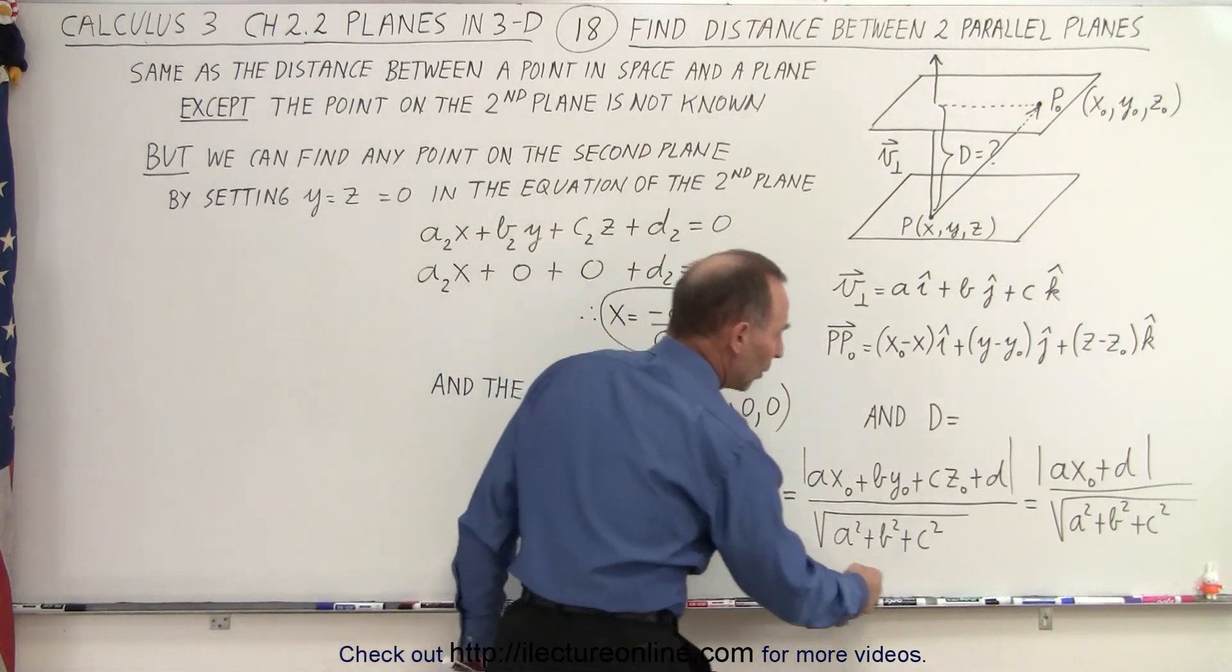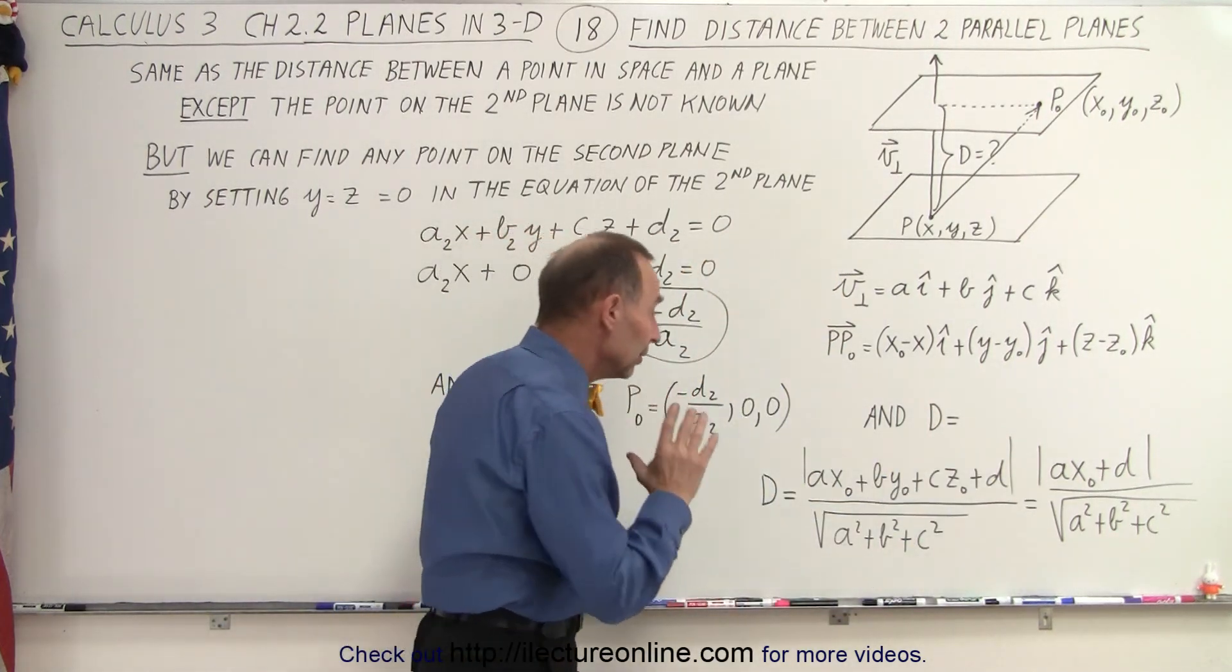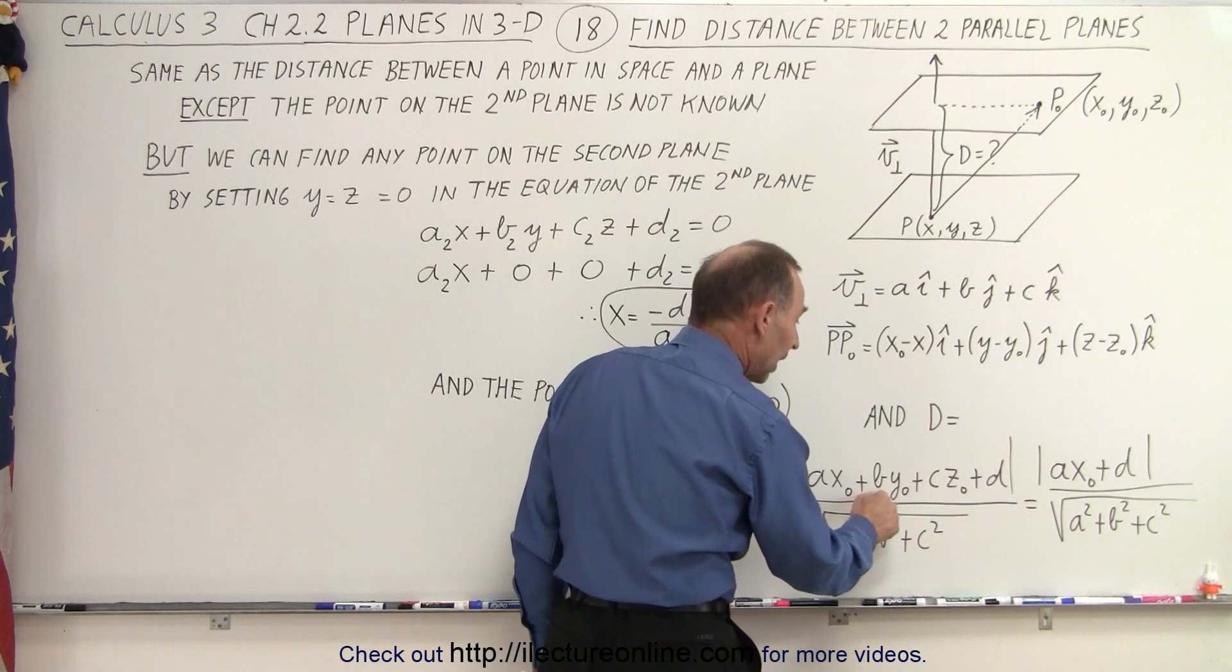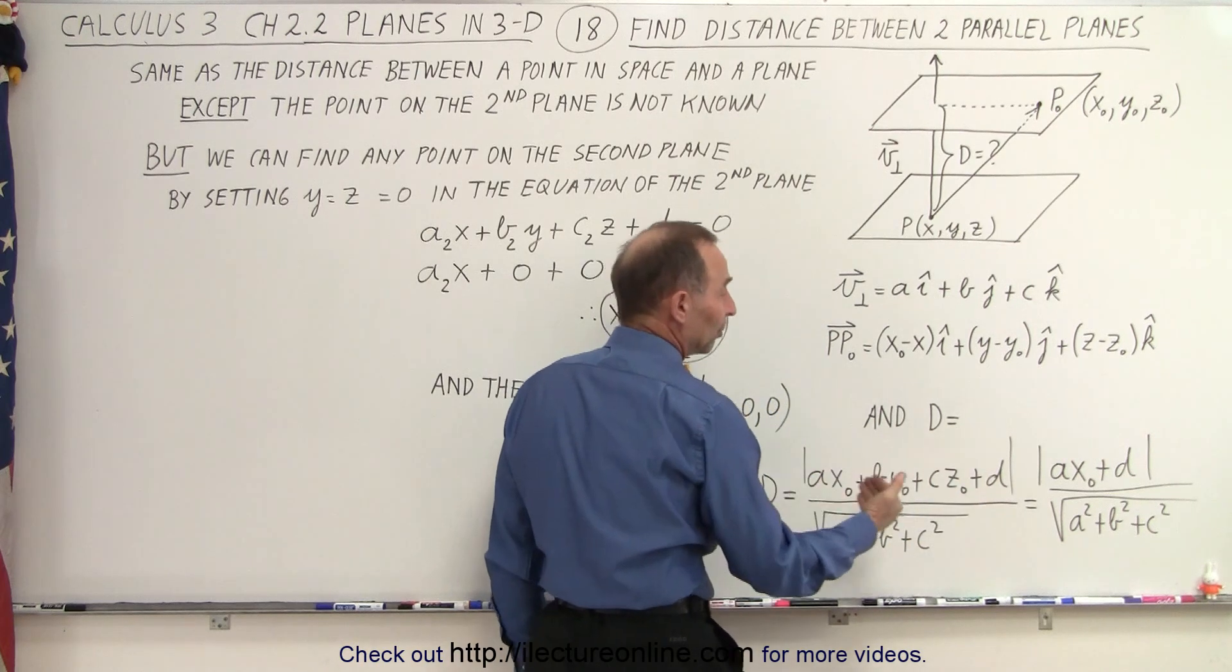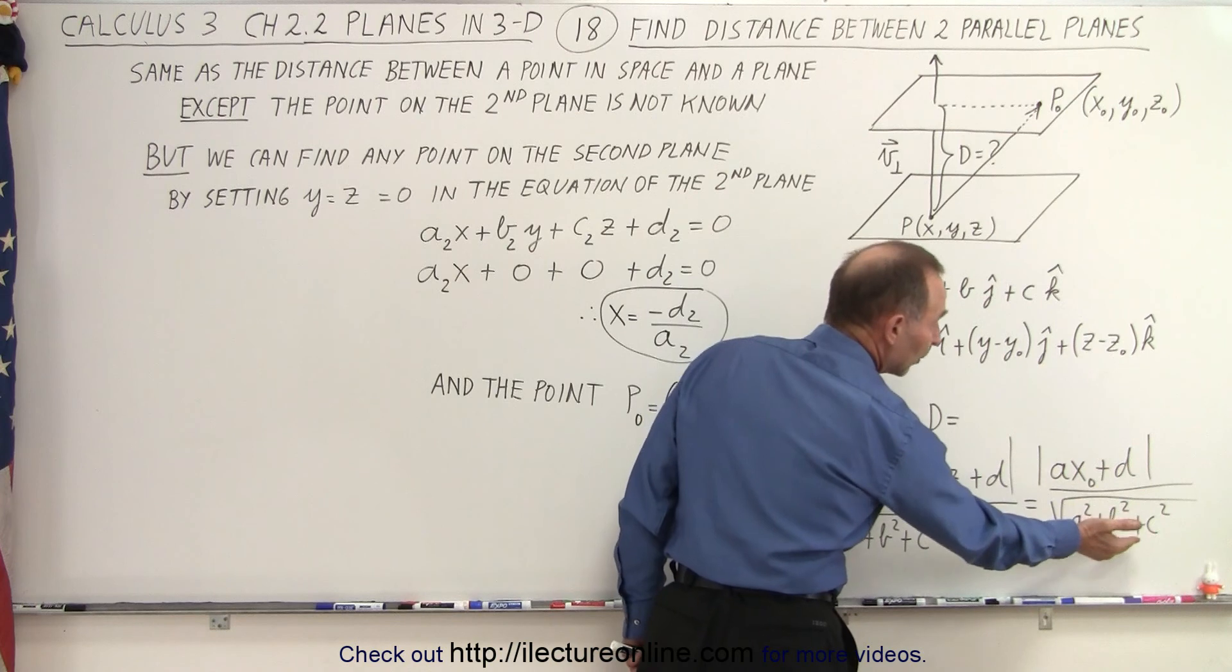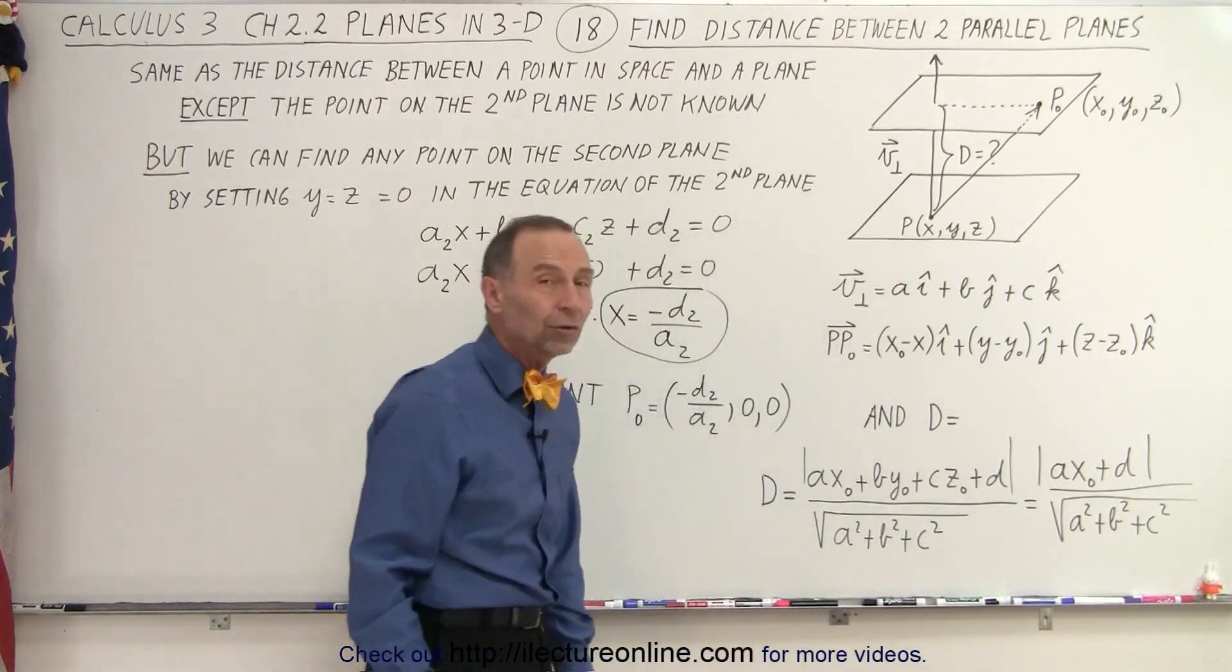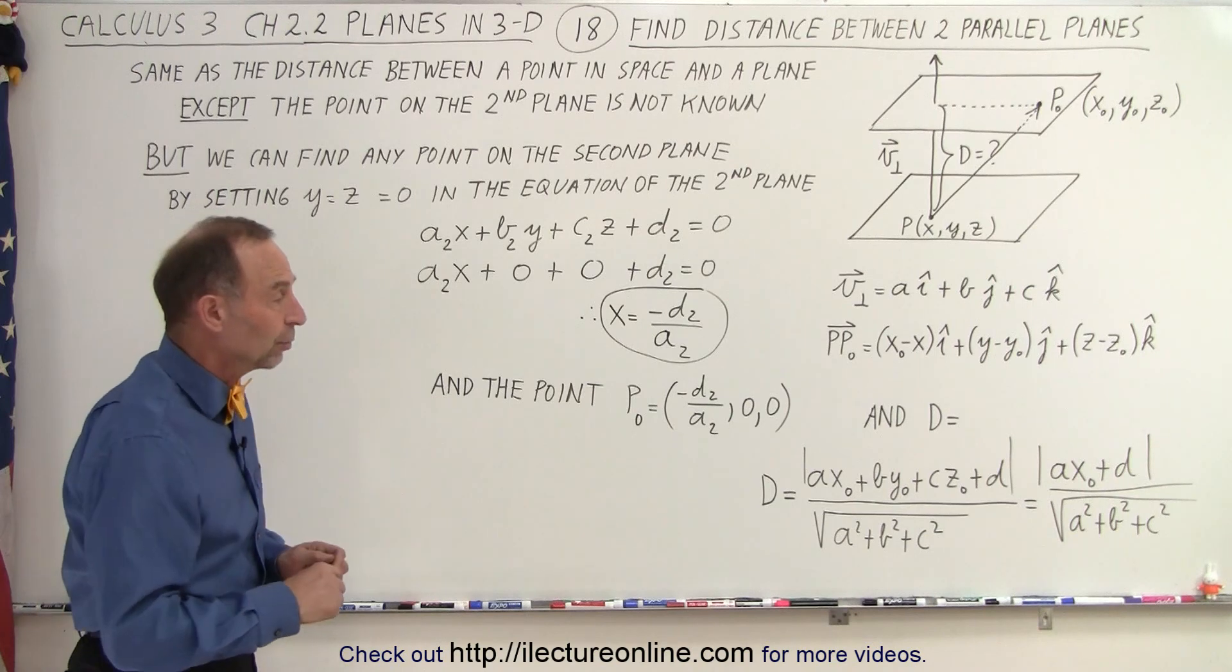Notice that this was the equation that we ended up with the last time. And now that Y sub not and Z sub not are equal to zero, those two terms go to zero. We're simply left with the numerator being AX sub not plus D, and we divide that by the magnitude of the perpendicular vector, which is the square root of A squared plus B squared plus C squared.